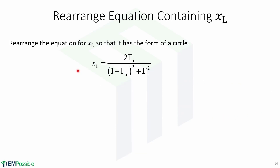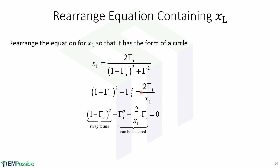The same thing will be done to XL so that the expression has the form of a circle. We start with this equation, then exchange XL to be on the denominator and this term to be on the left side. Then we move the right term to the left side, swap terms, and factor — obtaining an expression that has the form of a circle.